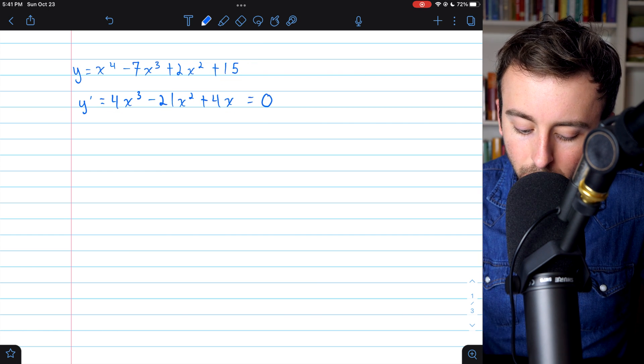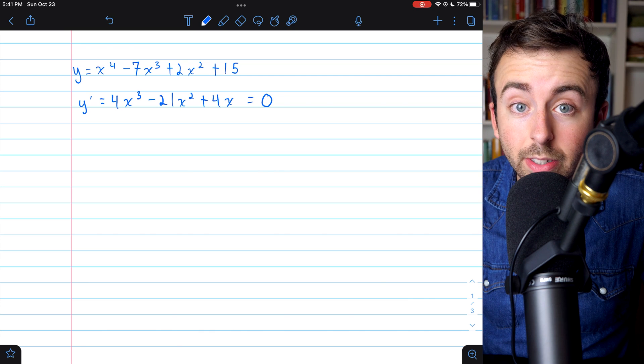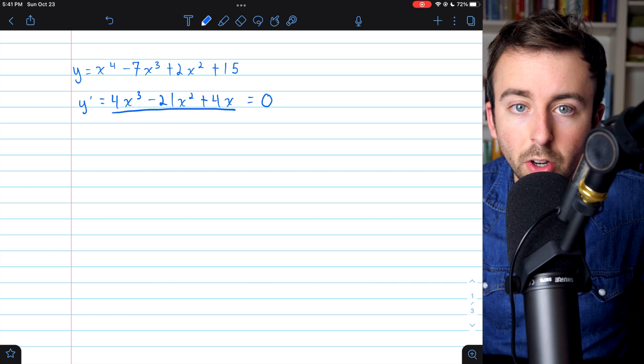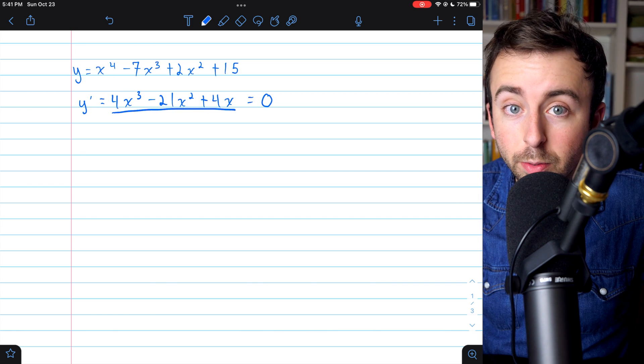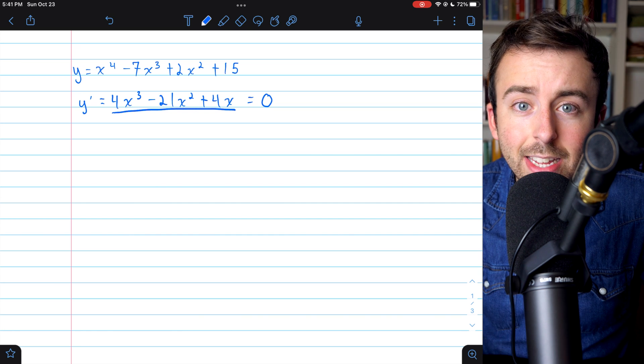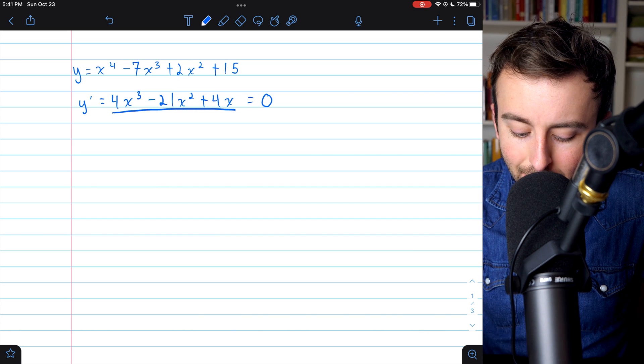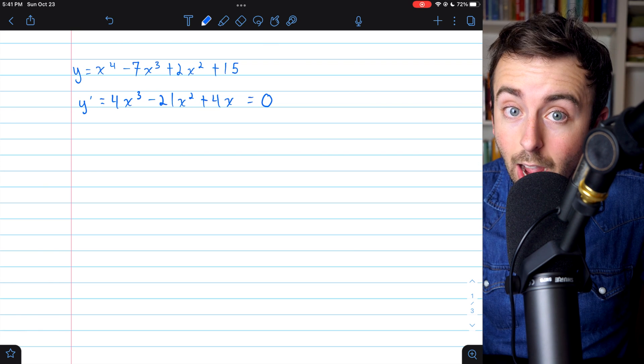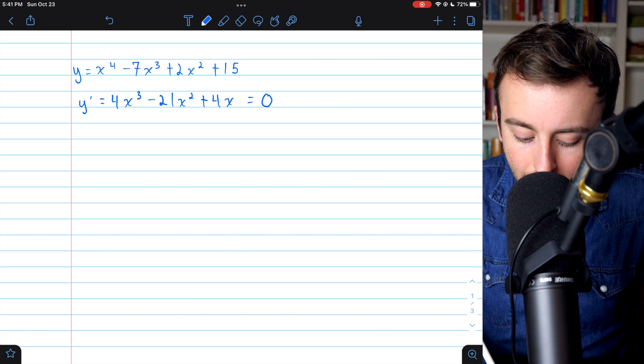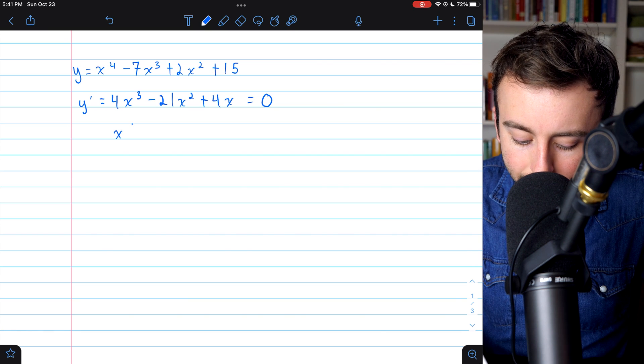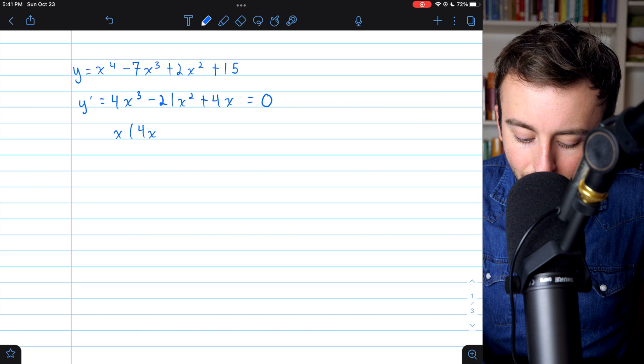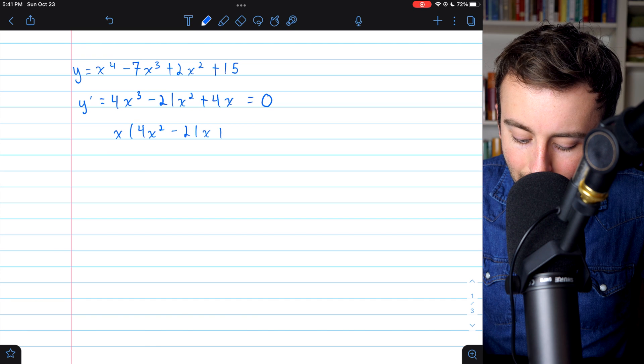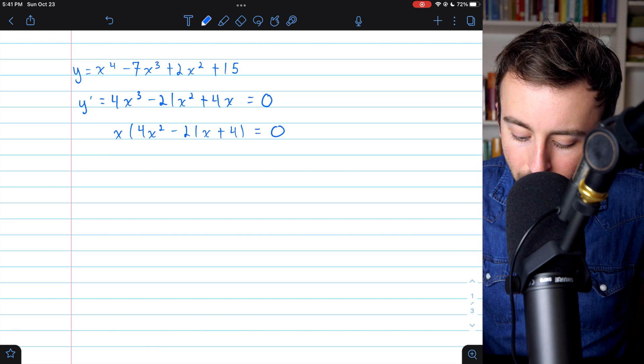And we want to set this equal to 0. Now, how are we going to solve this? Well, right now, this is a degree 3 polynomial, which can be a little more difficult to solve. But thankfully, we don't have any constant term. So it's pretty easy for us to just factor an x out of every term here. Then we'll have x times a quadratic equals 0, which will be pretty nice. So if we take out an x, what we will have left in parentheses is 4x squared minus 21x and then plus 4. And this all equals 0.